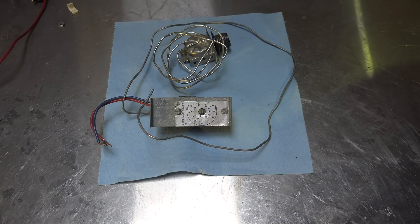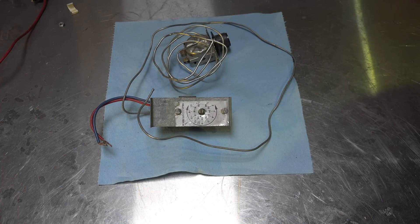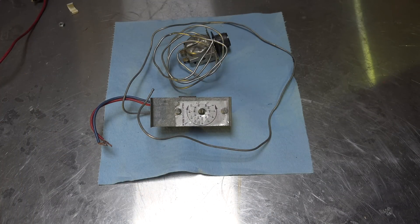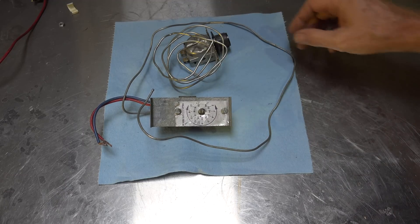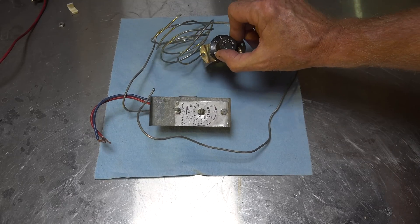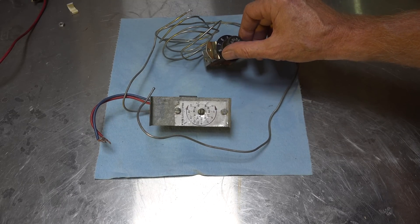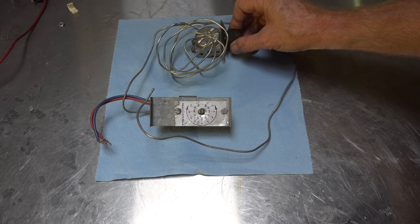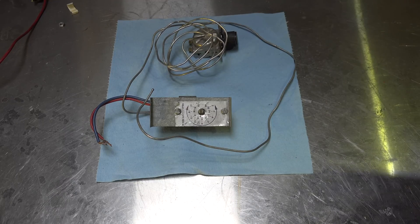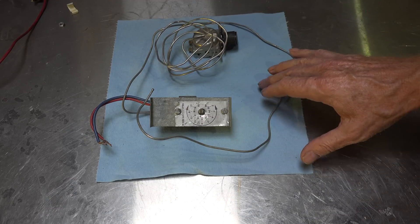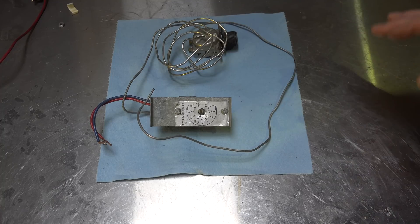Here I have a couple of bulb type thermostats. This one here is for a heat pump, an outdoor thermostat for heat pump. This is a thermostat that would be used in a refrigeration device, probably under 40 degrees. Both of these are what we call bulb type thermostats.